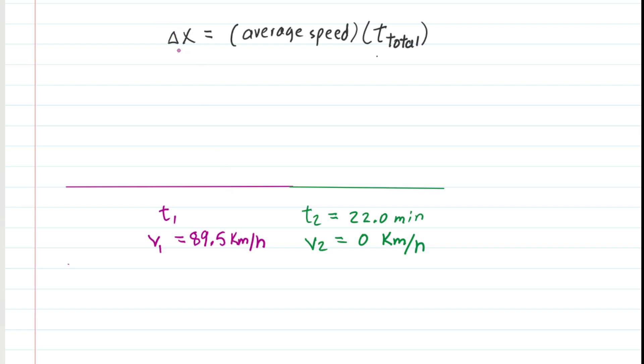Now what we're going to do next is represent the distance traveled during those two intervals. Remember distance traveled is average speed multiplied by time. So for the purple portion, we could say that the distance traveled is going to be the average speed, which was 89.5 during that phase of the motion multiplied by the time, which was T1. For the second phase of the motion, we would say delta x2 is equal to the average speed, which is zero multiplied by the time T2.